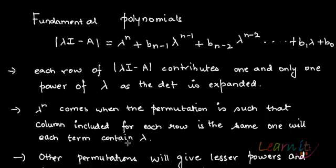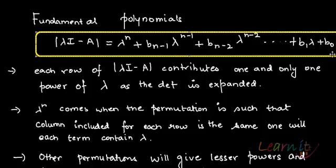The determinant will be a fundamental polynomial. Determinant lambda I minus A will equal lambda to the power n plus b n-1 into lambda to the power n-1, b n-2 into lambda to the power n-2 and so on till the constant term. This is obvious because each row of determinant lambda I minus A contributes one and only one power of lambda as the determinant is expanded.